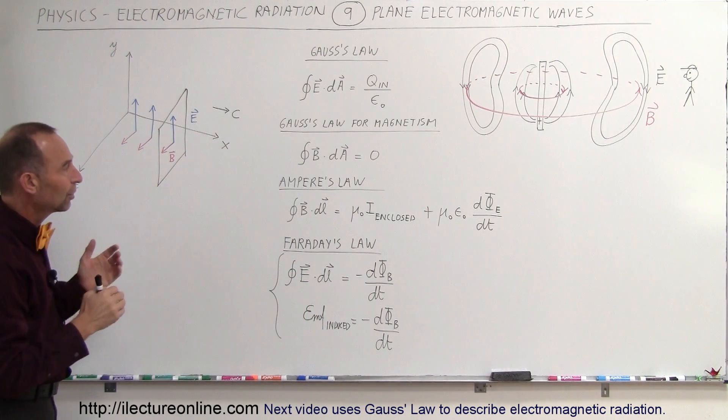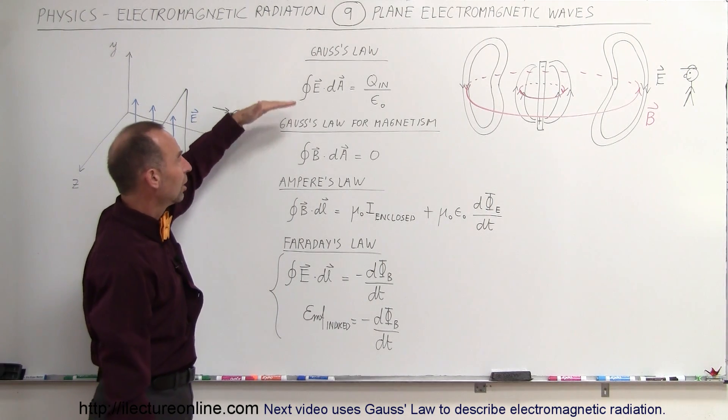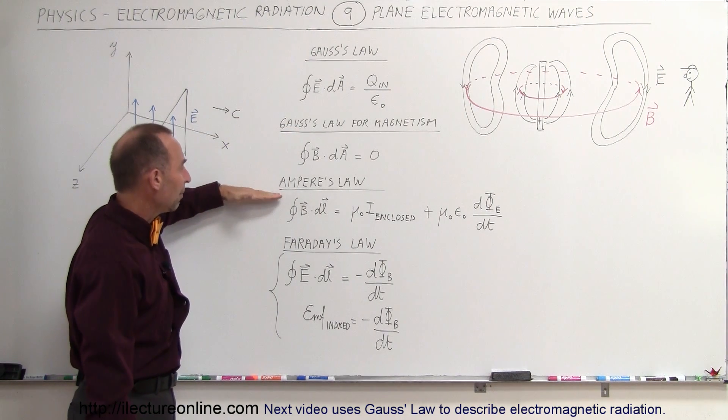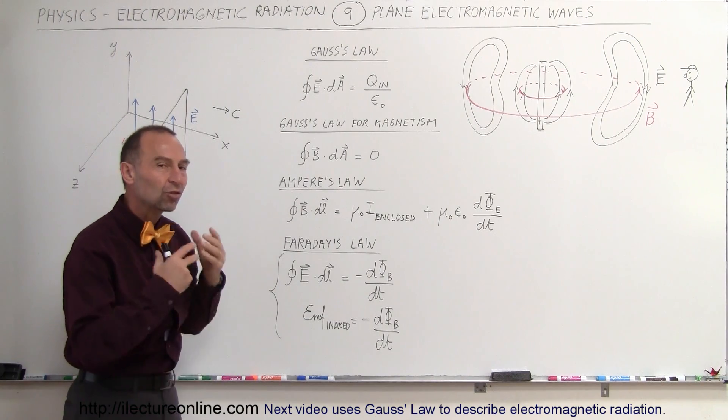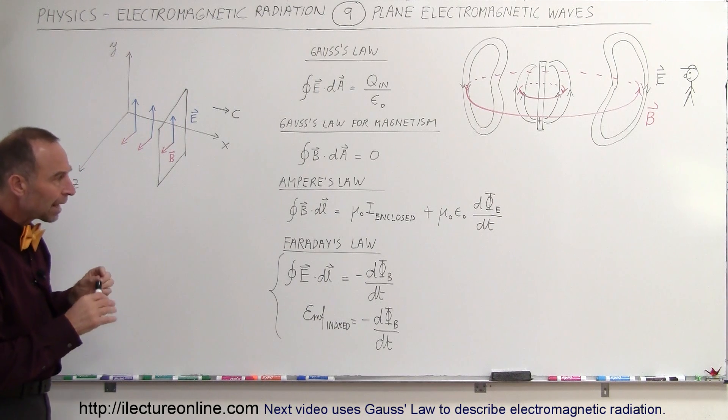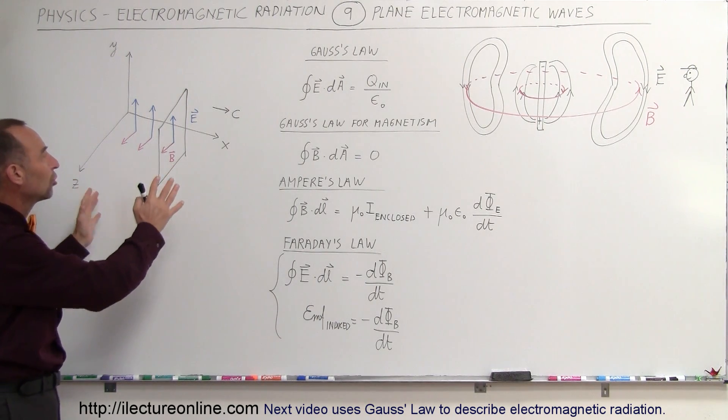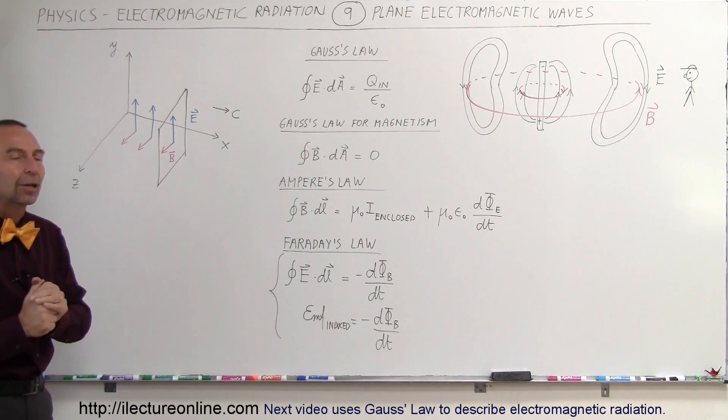What we're going to do now is we're going to take the Maxwell's equations. We're going to take Gauss's law, Gauss's law for magnetism, Ampere's law, and Faraday's law to describe what actually goes on inside these electromagnetic field oscillations. And by doing that, we'll be able to come up with equations that describe the motion and the existence of these electromagnetic waves.